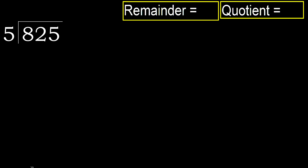825 divided by 5. 8 is not less, therefore with 8. 5 multiplied by which number is nearest to 8 but not greater.